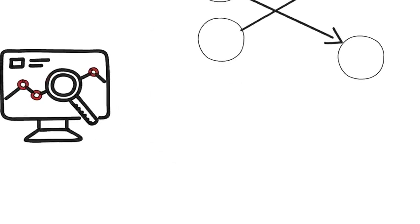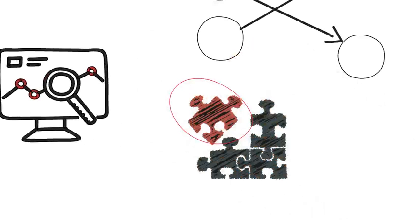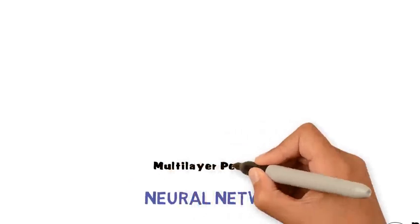Each node processes a small part of the task. The most common type of neural network is called a multilayer perceptron.